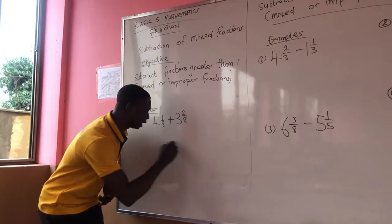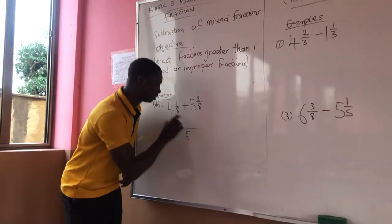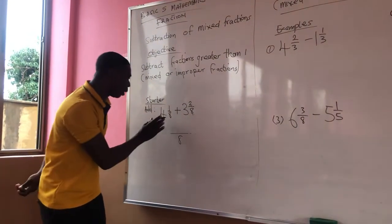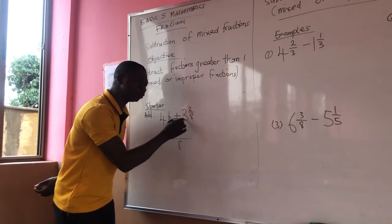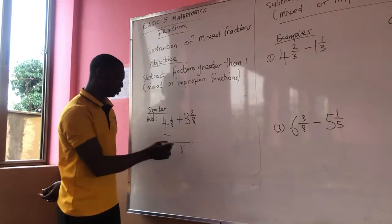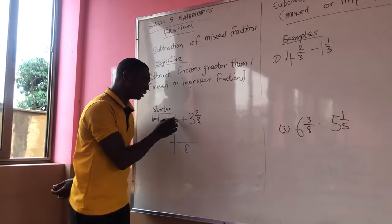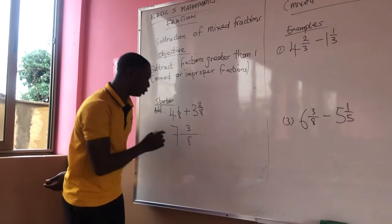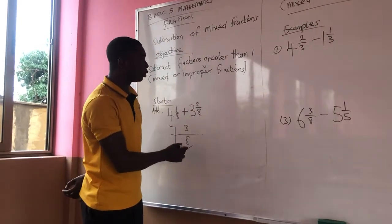Good. So we can say that our LCM is 8, since it is like fractions — same denominator. So I will add the whole numbers: 4 whole number plus 3 whole number gives me 7 whole numbers. Since we have the same denominator, I will add the numerators: 1 plus 2 gives me 3. So my final answer is 7 and 3 out of 8.